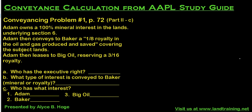Welcome to today's presentation on conveyance calculations from the AAPL study guide. We're on page 72 and we've just worked problems A and B in the prior session. What we're going to look at now is the answer to letter C: who has what interest — Adam, Baker, Big Oil — and what is their specific interest in this scenario?